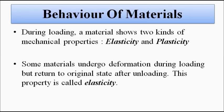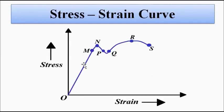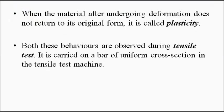During the tensile test, when tensile stress is applied on the materials, it exhibits two kinds of properties: elasticity and plasticity. The materials undergo deformation during loading when stress is applied, and they return to their original state when the stress is removed. This property is called elasticity and it is exhibited in the linear O-M-N region, maximum up to N. This linear portion is called the linear elastic region, within which the material shows elastic properties. Beyond N, the plastic behavior of the material is exhibited.